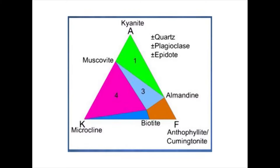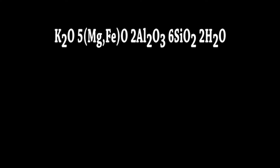In many Biotites, however, Fe-Mg is replaced by alumina, so that Biotite is represented by a small field extending parallel to the AF side. K is approximately constant at about 14 percent. For example, Biotite of composition K2O · 5(Mg,Fe)O · 2Al2O3 · 6SiO2 · 2H2O gives A equal to 14, K equal to 14, and F equal to 72.